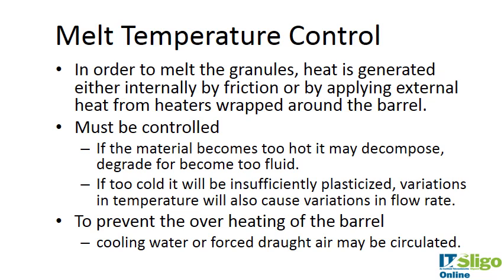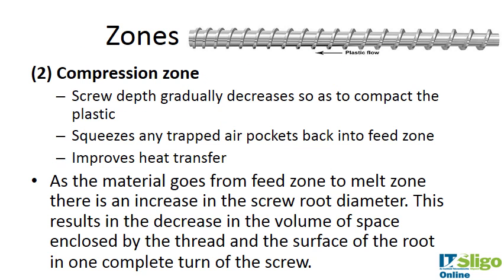To melt the granules, heat is generated internally by friction or externally by heaters wrapped around the barrel. This must be controlled: if the material becomes too hot it starts to decompose or degrade; if too cold, it is insufficiently plasticized and doesn't mix well. To prevent overheating, cooling water may be circulated around the barrel. In the compression zone, the screw depth gradually decreases to compact the plastic, squeezing out any trapped air pockets back into the feed zone and improving heat transfer.